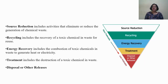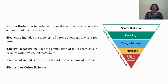Waste management can be done by either of these means. The most preferred is source reduction, which includes activities that eliminate or reduce the generation of chemical waste. Next is recycling, which includes recovery of a toxic chemical in waste for reuse. If those strategies are not possible, energy recovery is the next option — combustion of toxic chemicals in waste to generate heat or electricity. Less preferred is treatment, which includes destruction of a toxic chemical in the waste. If none of these options are possible, the last resort is disposal.